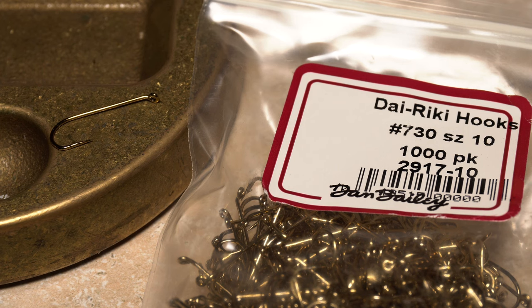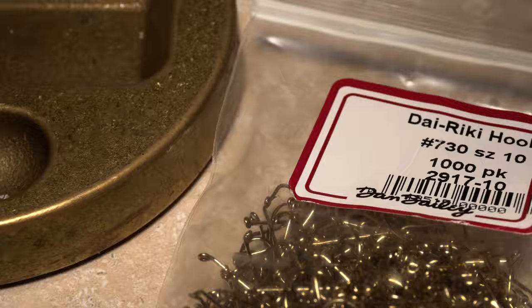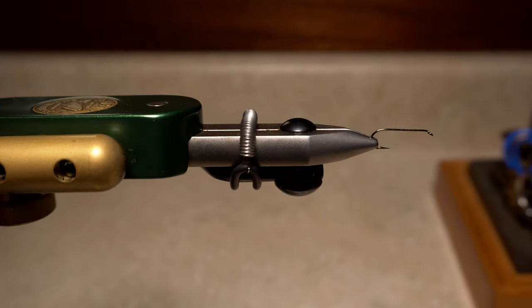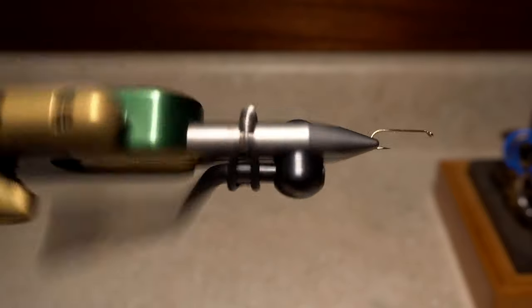For a hook, a Dairiki number 730 in size 10 is a good place to start. I like to tie this pattern using a rotary vise as there are a number of steps where it comes in real handy.